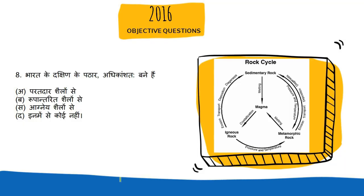Next question: Bharat ke Dakshin ke pathar adhikanshta bane hain. Jo iska sahi answer hai woh hai Aagneya Shailon se. Aur jo Aagneya Shaile hoti hain unki jo utpatti hoti hai woh magma se hi hoti hai.